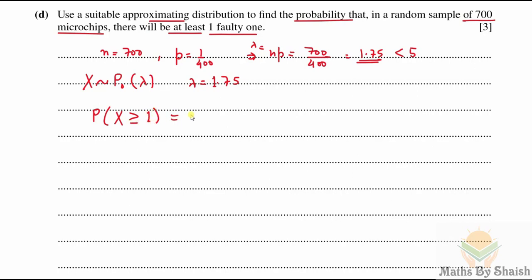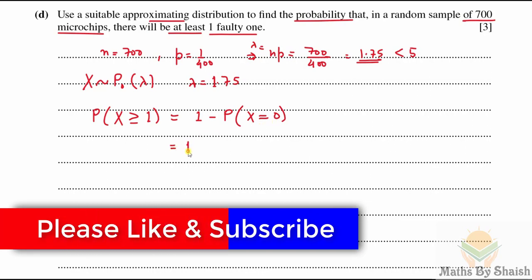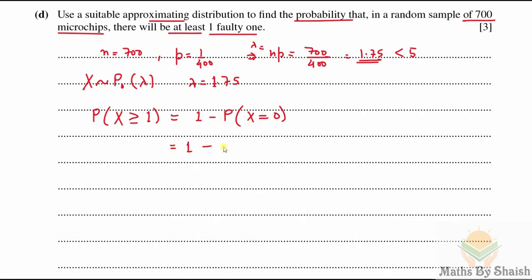P(X≥1) = 1 − P(X=0). Using Poisson with λ=1.75: P(X=0) = e^(−1.75) × 1.75^0 / 0! = e^(−1.75). So the answer is 1 − e^(−1.75), which from the calculator is 0.8262..., giving 0.826 to three significant figures.